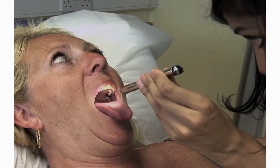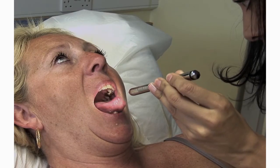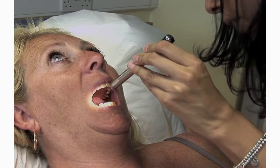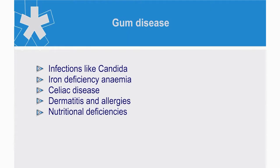In the mouth, we examine the teeth and gums for signs of infection or gum disease. Gum disease may indicate several causes, including infections like Candida, iron deficiency anemia, celiac disease, dermatitis and allergies, and nutritional deficiencies.